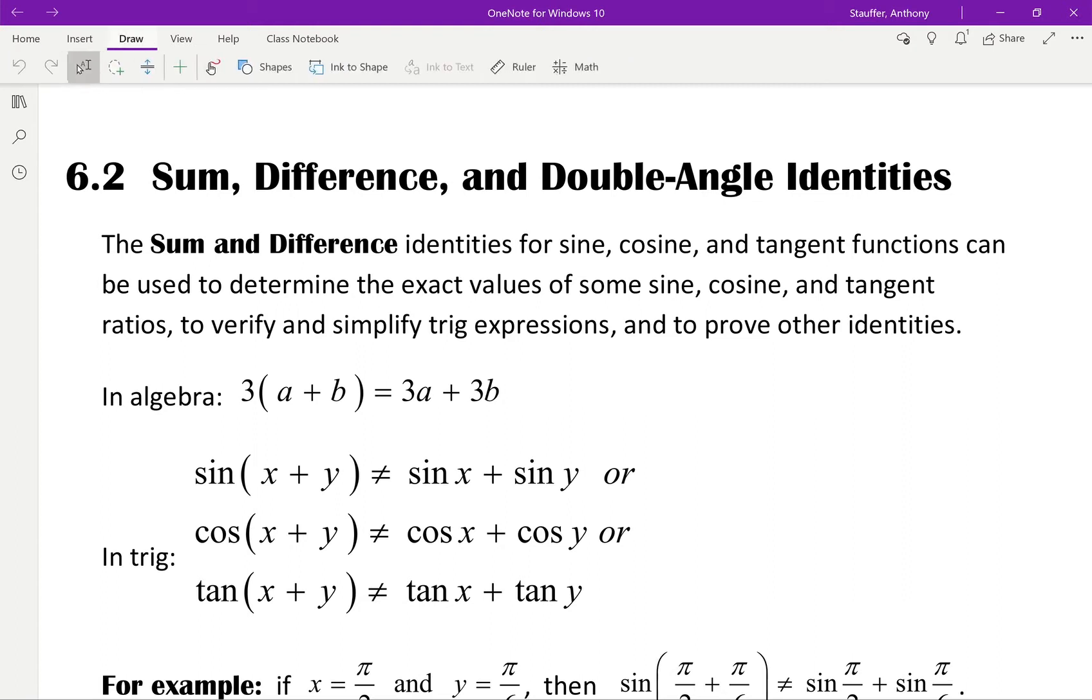Alright guys, so we're going to get right back into it, where we have 6.2, sum, difference, and double angle identities.